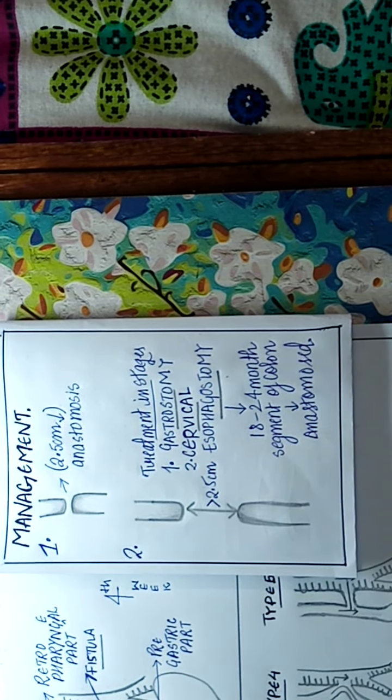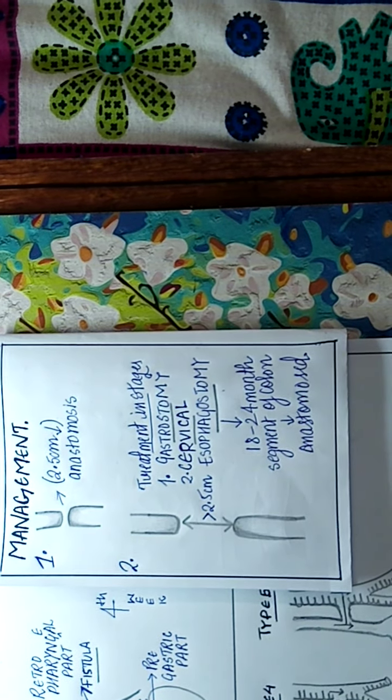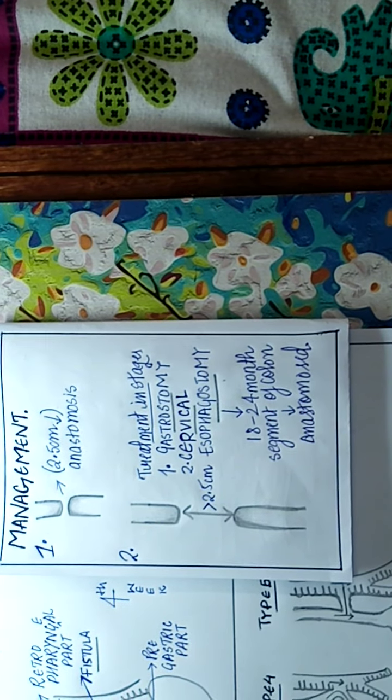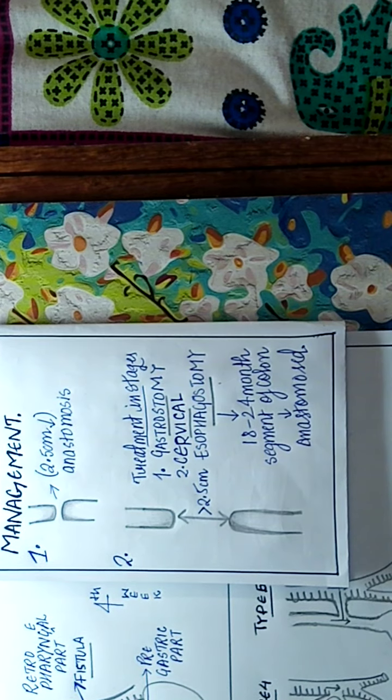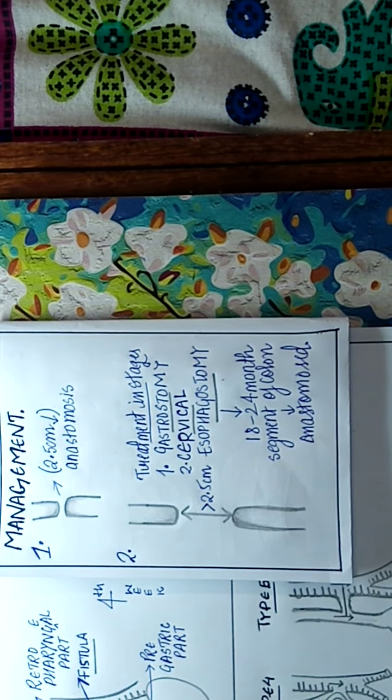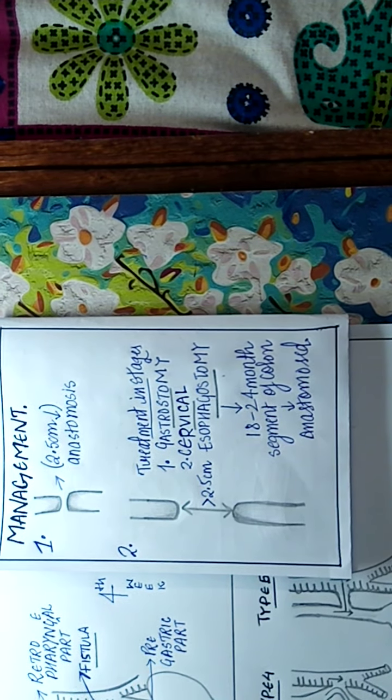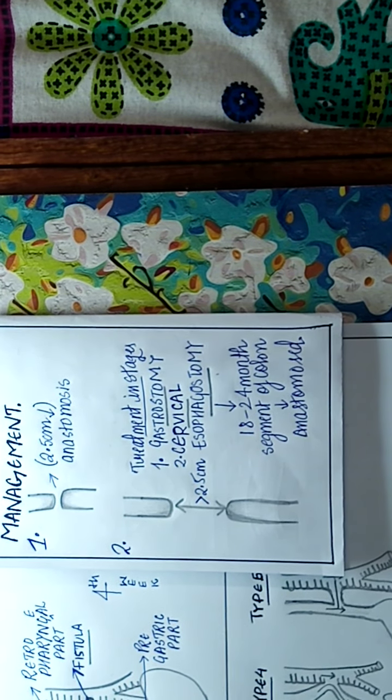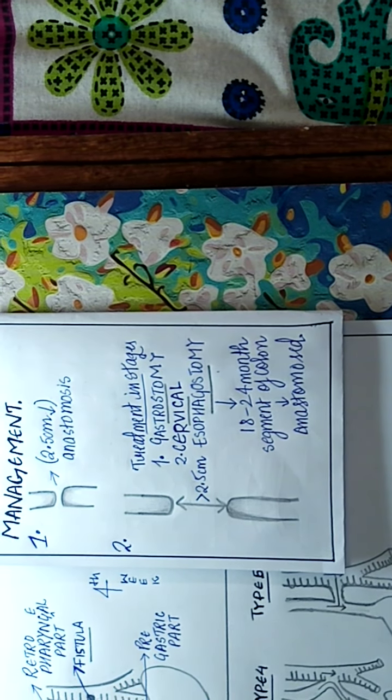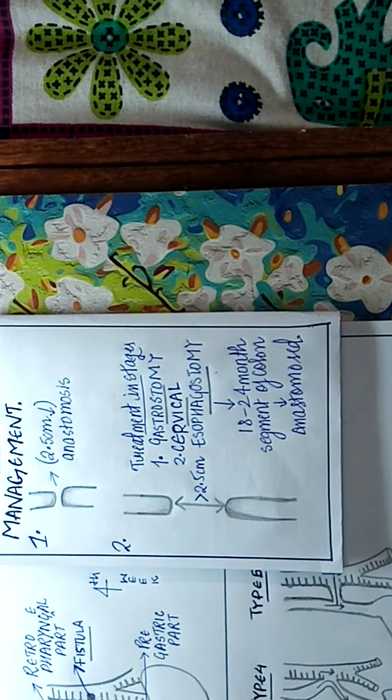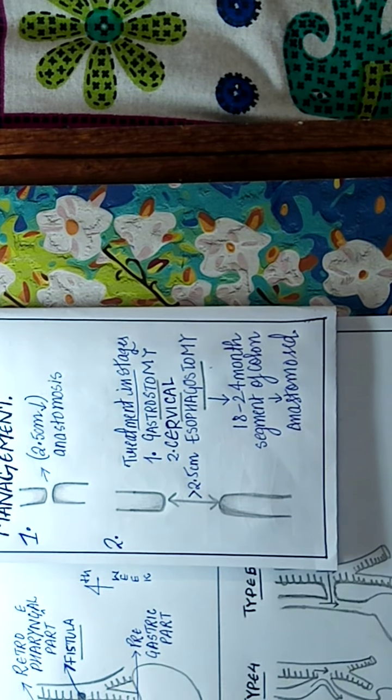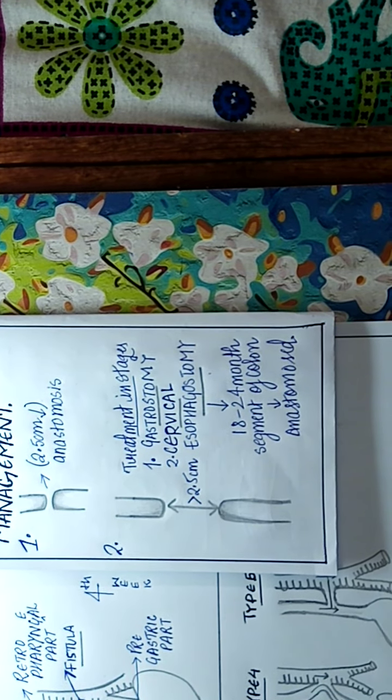First, there will be a formation of gastrostomy and a cervical esophagostomy, and after that at the age of 18 to 24 months, we will cut a segment of the colon and it will anastomose to cover the distance between the esophagus.